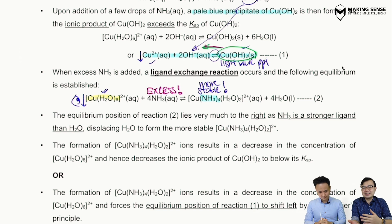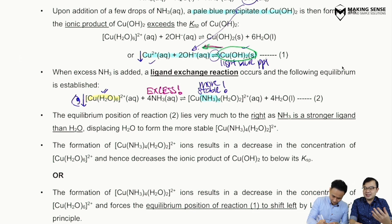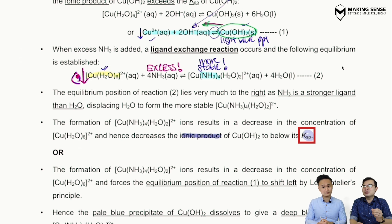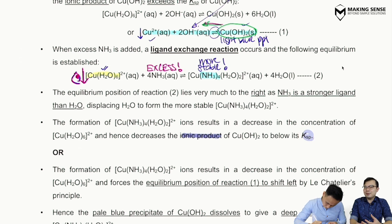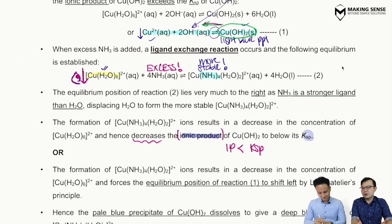Alternatively, this can be explained using the Ksp concept. The aqua complex and free Cu2+ are treated as equivalent here. When the copper–ammonia complex forms, Cu2+ concentration drops, so the ionic product of Cu(OH)₂ decreases. At some point it falls below the Ksp of copper hydroxide. We know from Ksp that if the ionic product falls below Ksp, the precipitate will not form — and that explains why the blue copper hydroxide precipitate dissolves.